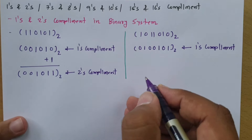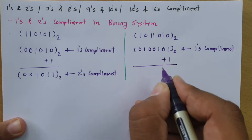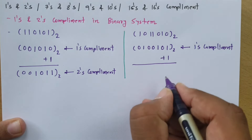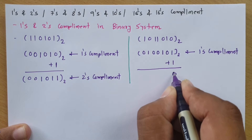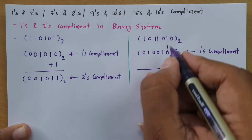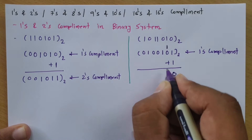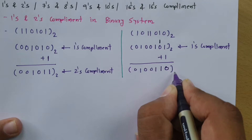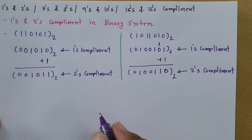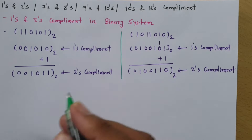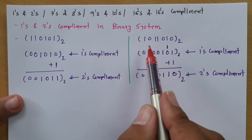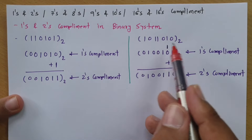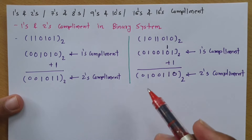To get 2's complement we add 1. So 1 plus 1 is 2, but in binary the maximum digit is 1, so 2 is represented as 0 with a carry of 1. Then 1 plus 0 is 1, then 1, then 0, then 0, then 1, then 0. This is the 2's complement. In summary, for 2's complement add 1 to the 1's complement, and for 1's complement replace 1 with 0 and 0 with 1.